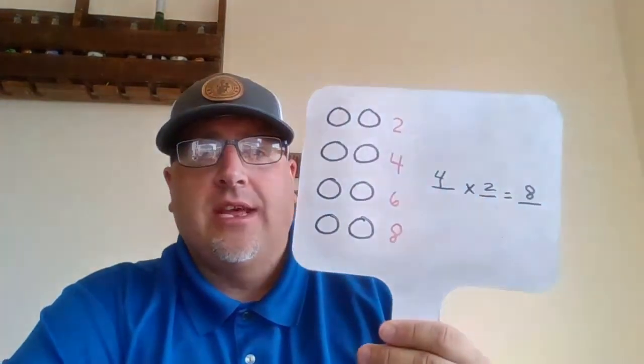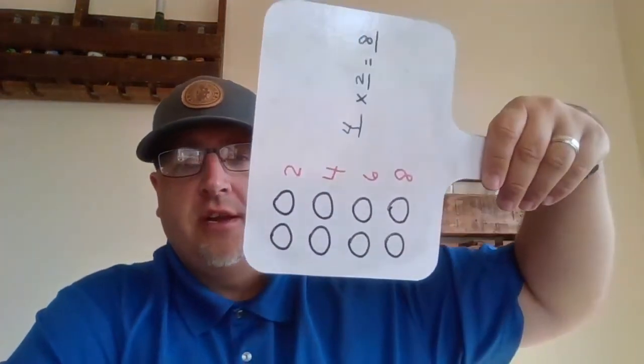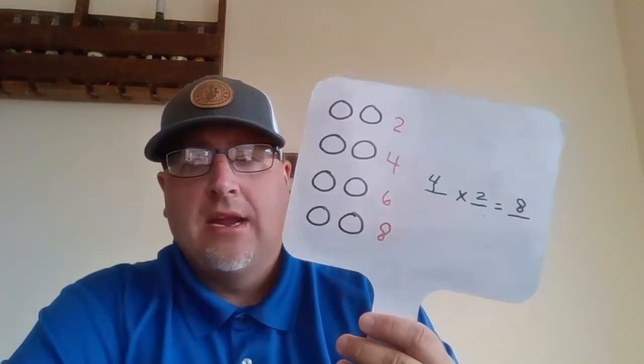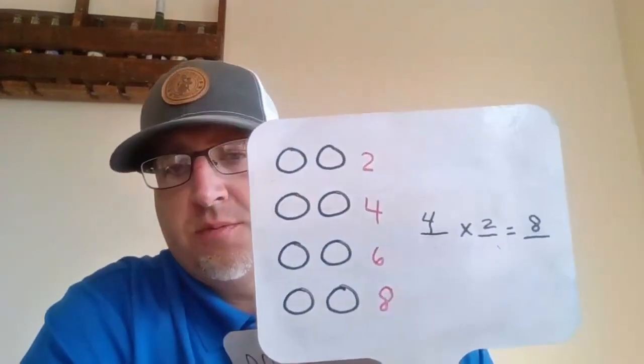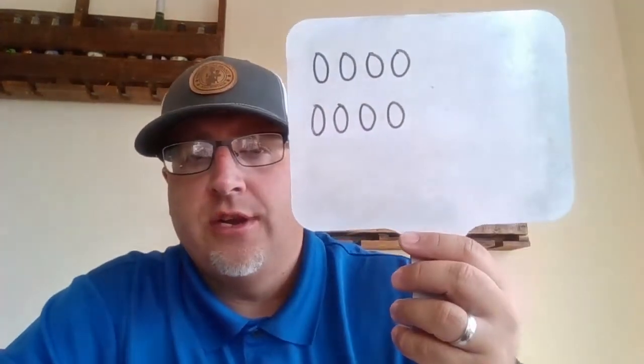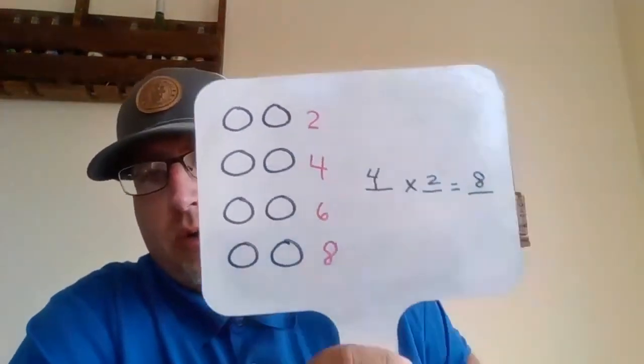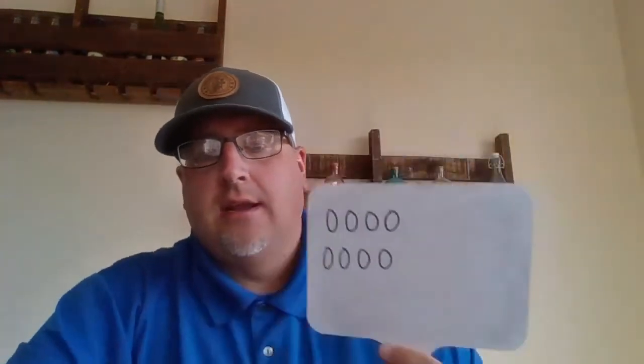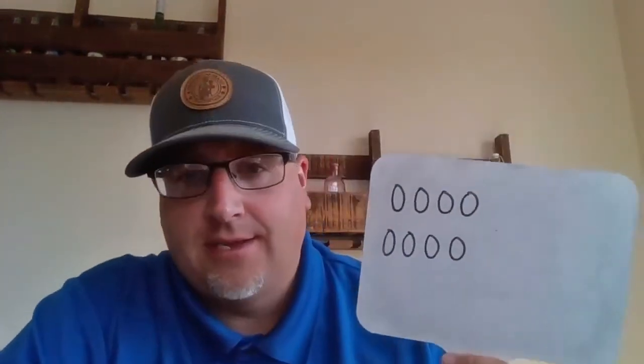Now I'm going to change it up a little bit. Let's pretend I took this array and just turned it on its side. That's where the commutative property is going to start to really take place and give you an idea. So what I did was — there you go — I turned it. There's the first array and now I turned it on its side. We're going to go from here and we turned it and now we have this.